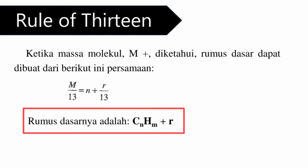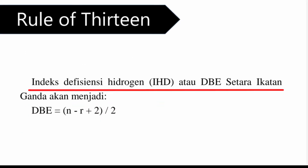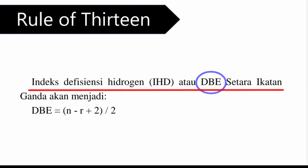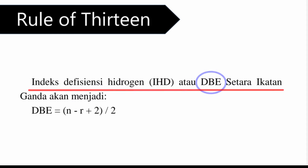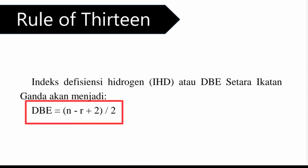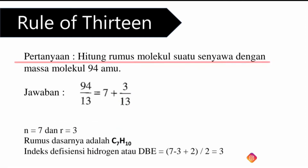Indeks hidrogen defisiensi atau IHD, yang juga dikenal sebagai double bond equivalent atau DBE, menentukan berapa jumlah ketidakjenuhan suatu senyawa. Setara ikatan ganda akan menjadi DBE sama dengan N dikurang R ditambah 2, dibagi 2.